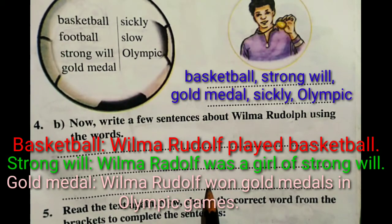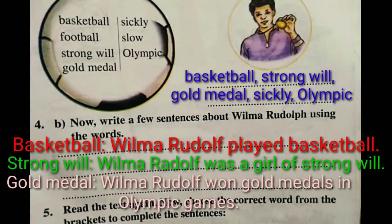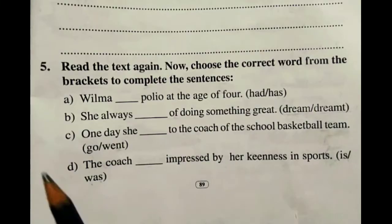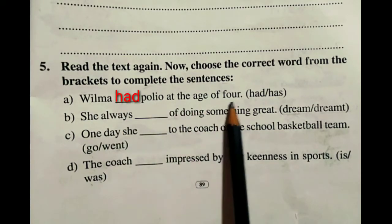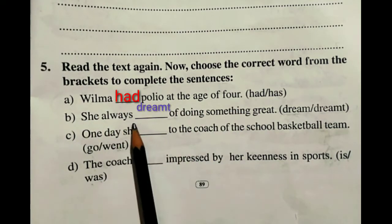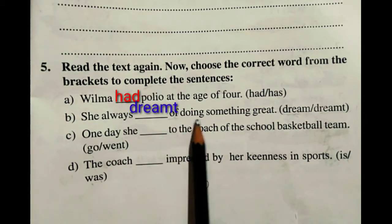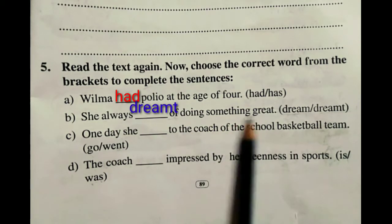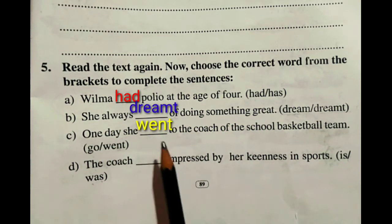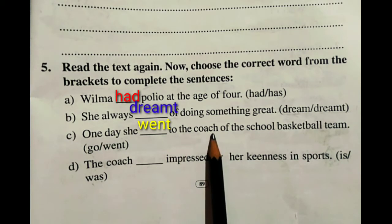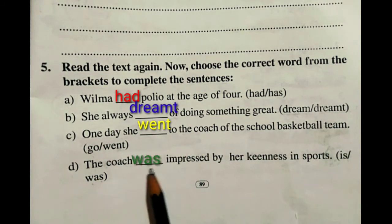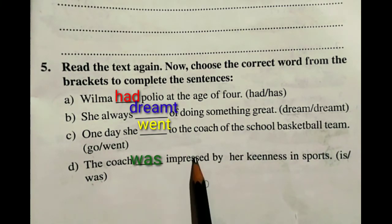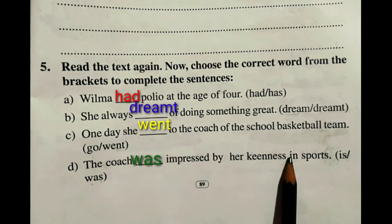Answers for Activity 5: Wilma had polio at the age of 4. She always dreamed of doing something great. One day she went to the coach of the school basketball team. The coach was impressed by her keenness in sports.